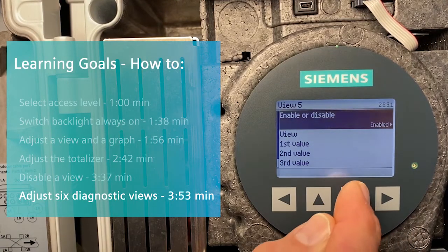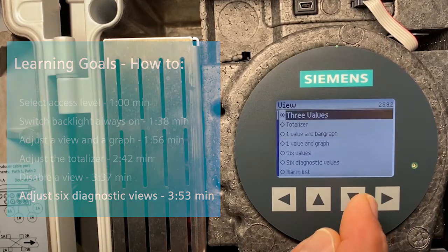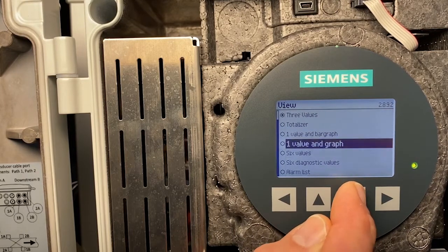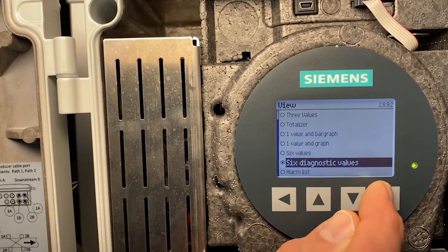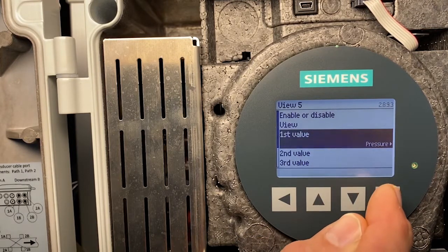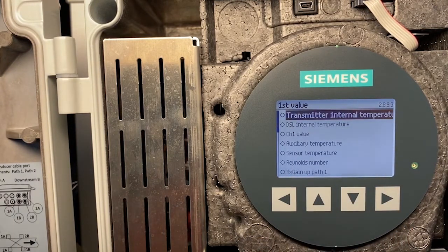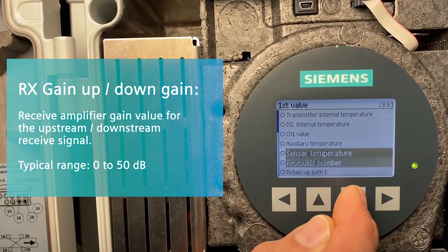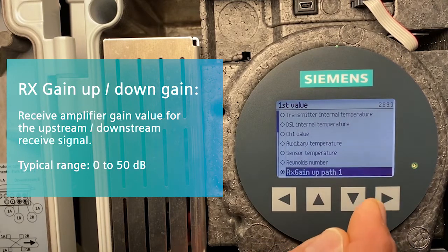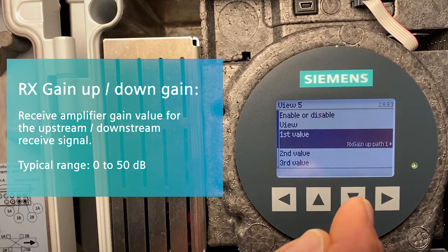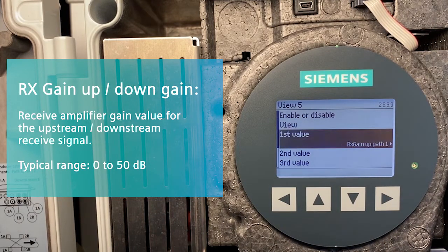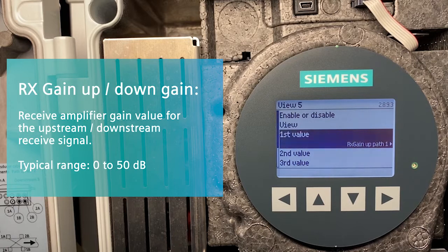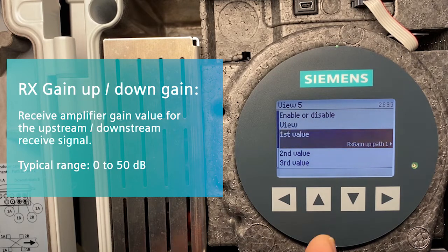Six diagnostic values. The first value I want to choose is Rx gain up path 1. Here you receive amplifier, the gain value for the upstream receive signal. Lower gain values indicate a stronger receive signal. Typical range is from 0 to 50 dB.